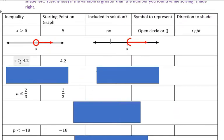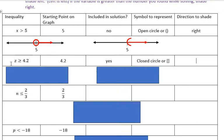The second example: Z is greater than or equal to 4.2. The starting point is 4.2. Is it included in the solution? It has the equal to part, so yes, it is included. So we should use a closed circle or brackets. We have to ask ourselves: are we going to shade to the right or to the left? Looking back at the inequality, Z is greater than or equal to 4.2, so we shade to the right.